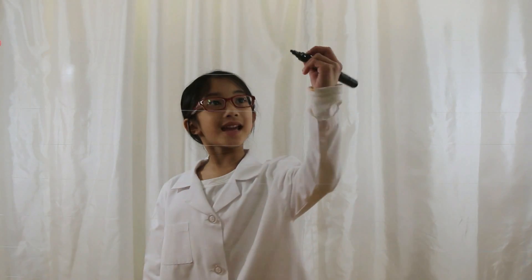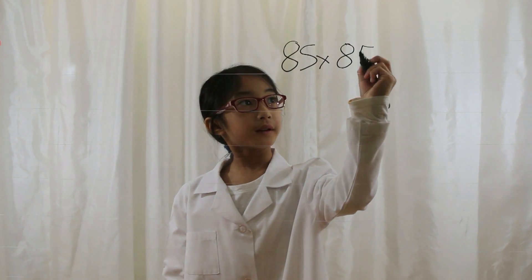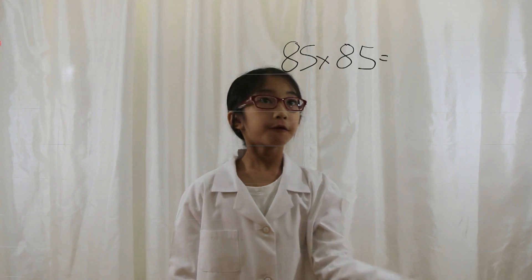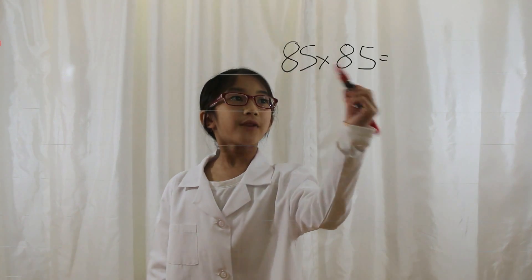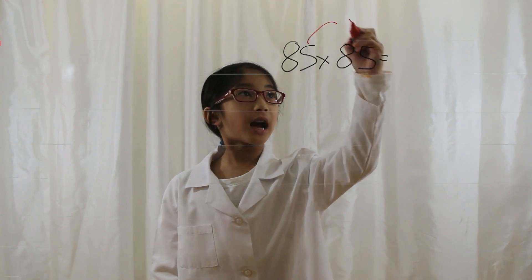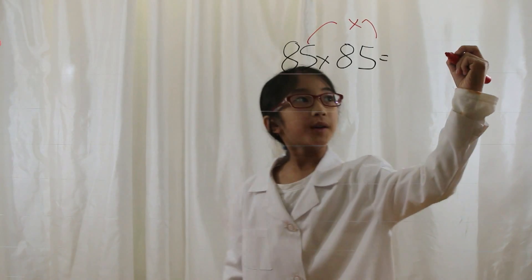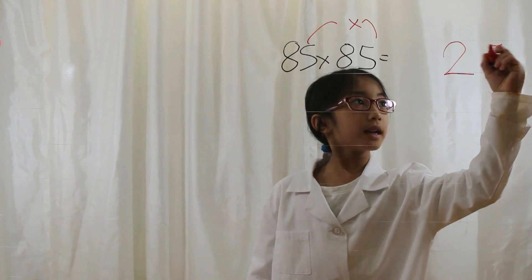Let's say you have 85 times 85. First you look at the ones digit, which is 5. 5 times 5 is 25. Therefore, you put a 25 at the end of your answer.